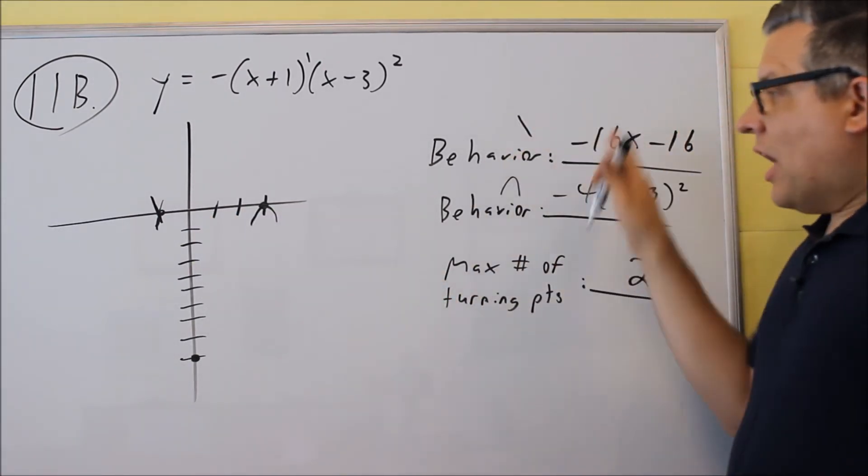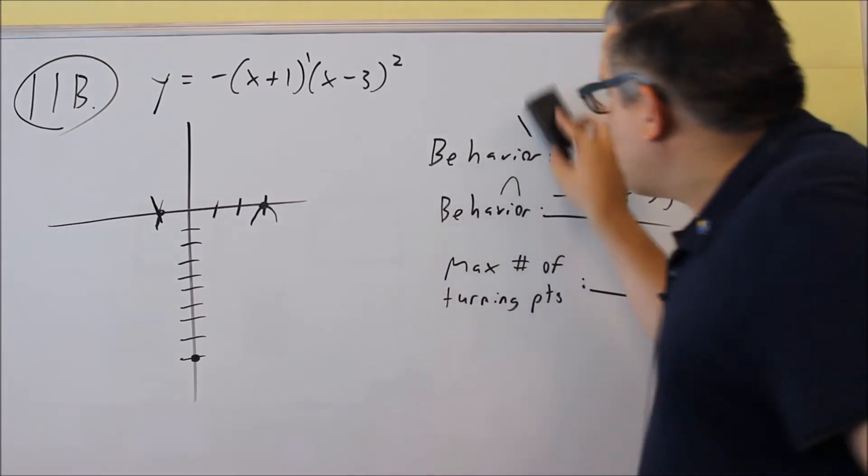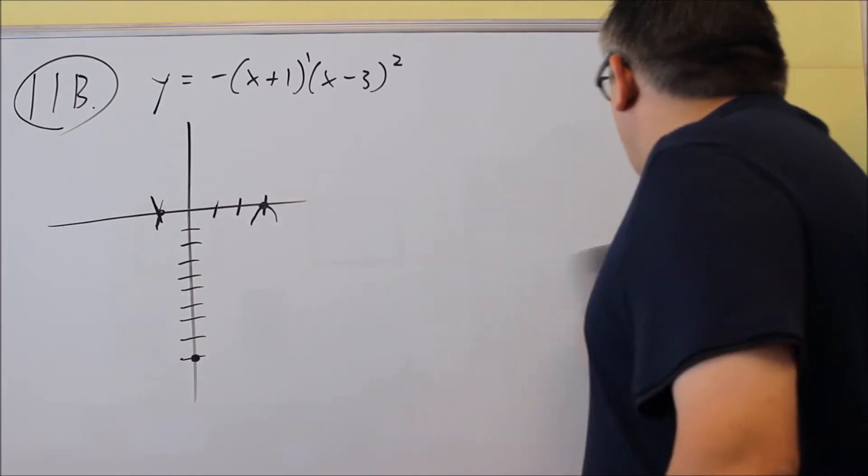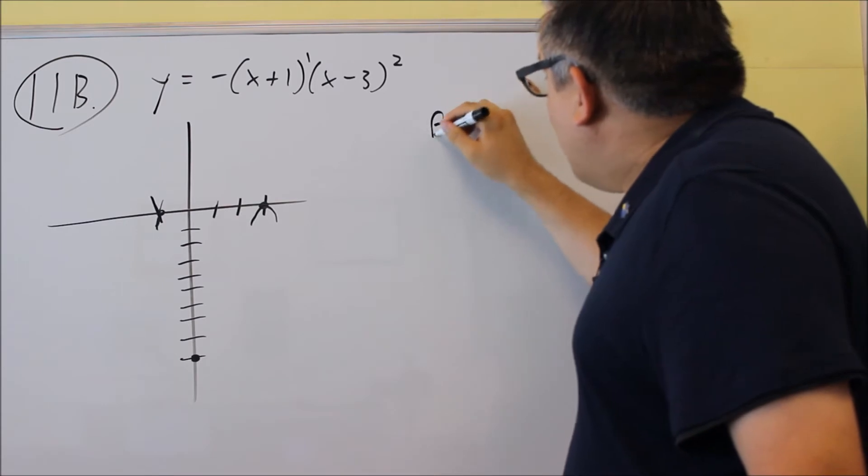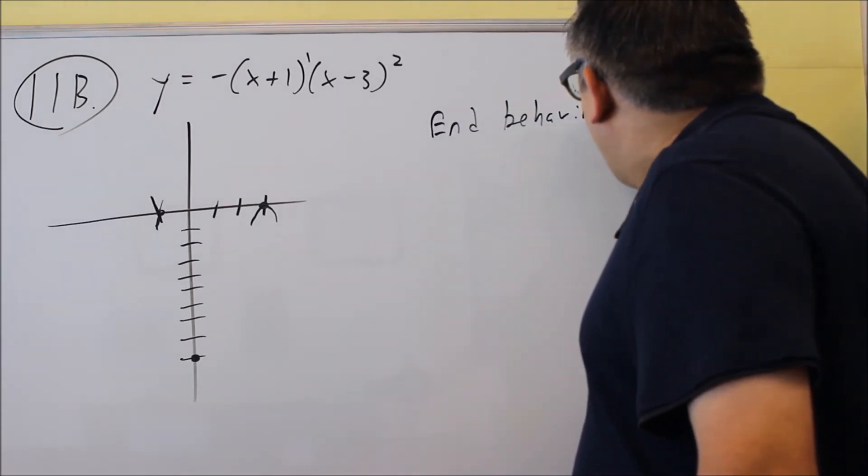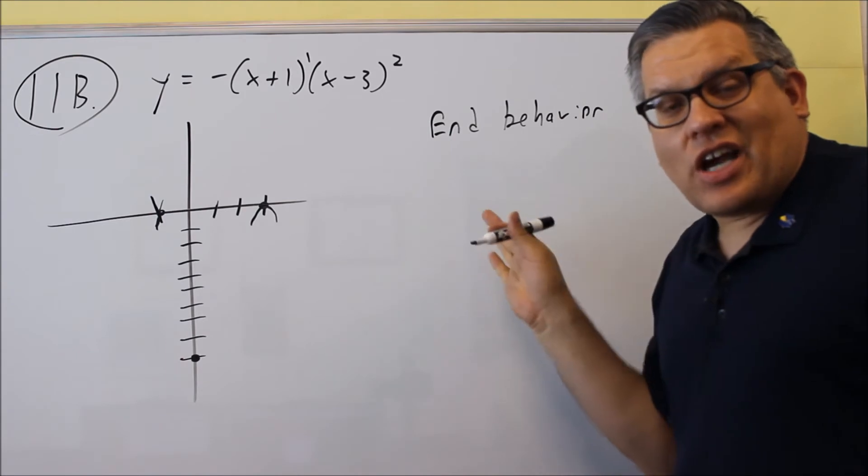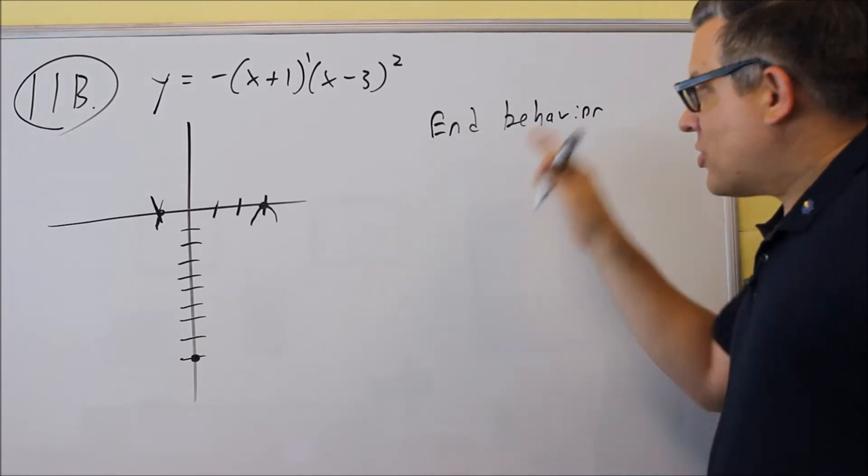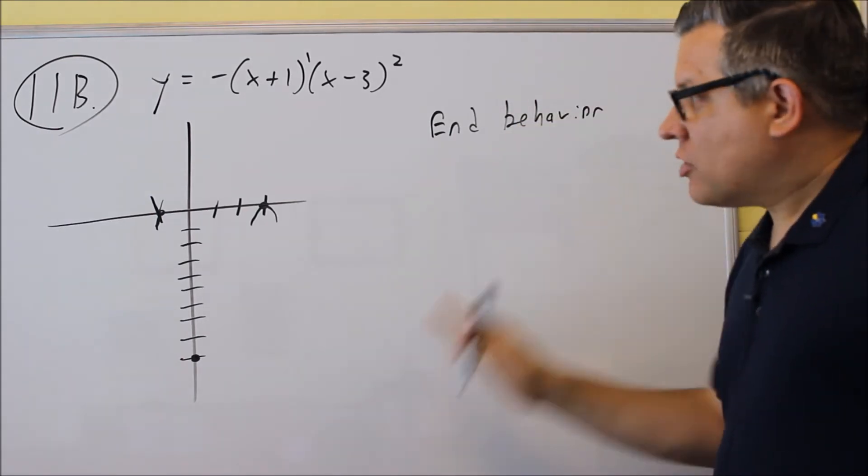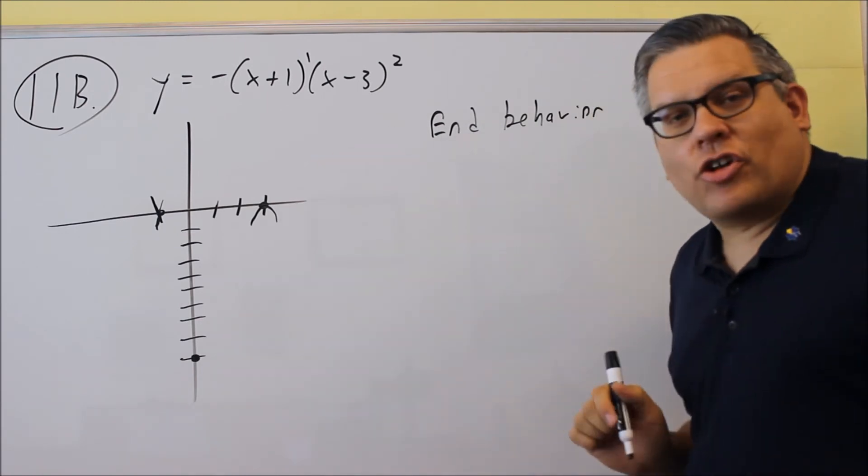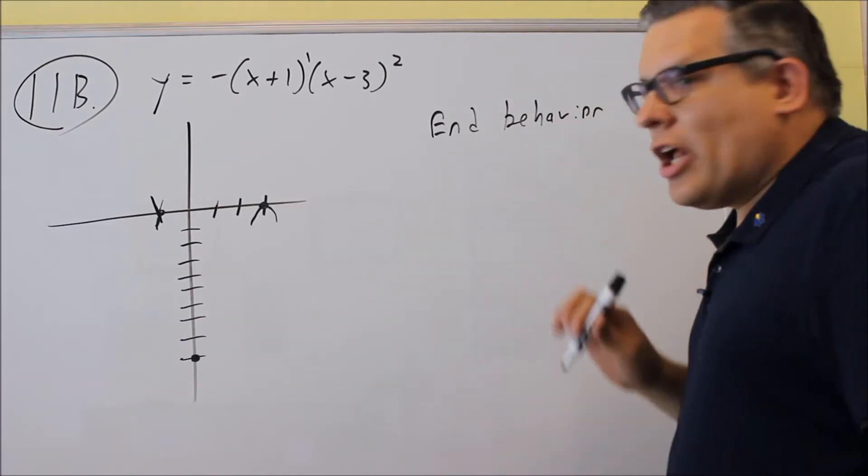Now, besides the behavior at each of the zeros, we also have one last piece. And this is called end behavior. Now the test itself is not going to ask you for end behavior, but sometimes it's important to have that one so we know which direction, how to finish the graph here.